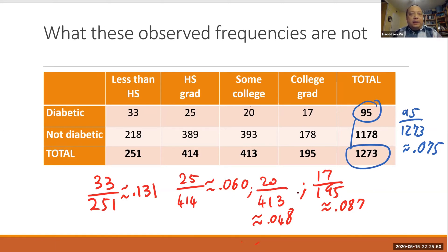And the point of hypothesis testing is to test to see whether or not this kind of sample could have been obtained by chance. So we would want to compare these observed frequencies with the expected frequencies, meaning the frequencies that we would have gotten if educational level and status of being diabetic were truly independent. Every educational level would have the same proportion of diabetic as the overall.